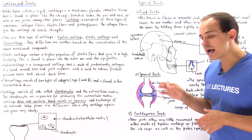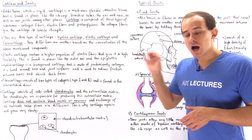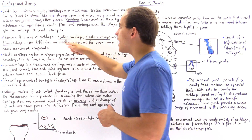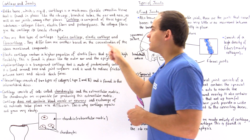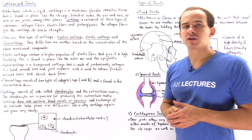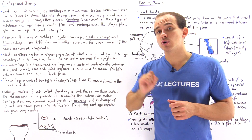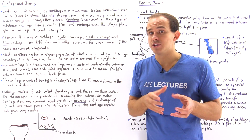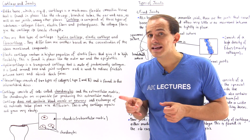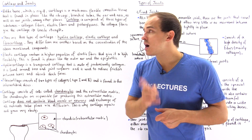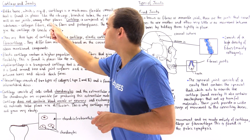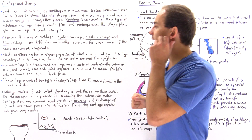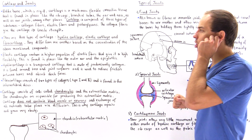We have three types of cartilage connective tissue: hyaline cartilage, elastic cartilage, and fiber cartilage. These different types of cartilage differ from one another based on the concentration of these substances inside the matrix of that particular cartilage.